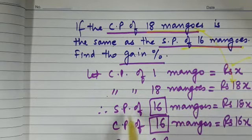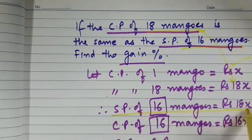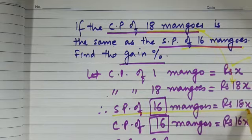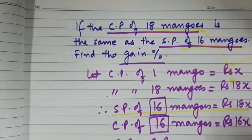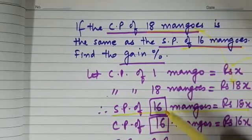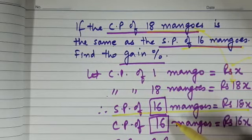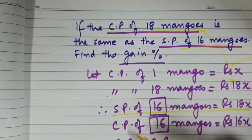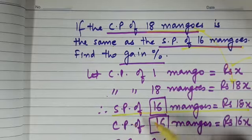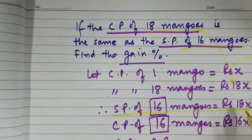We will be writing down SP of 16 mangoes is equal to 18x. Now for checking whether there is a gain or loss, we need to have the number of mangoes as same, so we will be looking at price for 16 mangoes in terms of the selling price and the cost price.